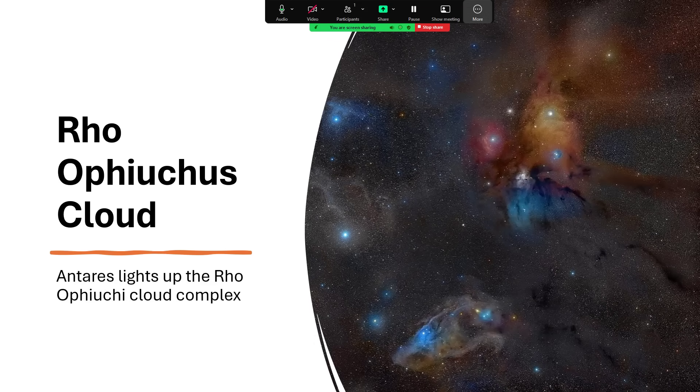Called the Rho Ophiuchus Cloud. Very beautiful indeed in this astronomical photograph, showing all the different colors, the reflection of blue light, the red from lit up, emitting hydrogen gas, and some dark dust lanes of cold material there as well.